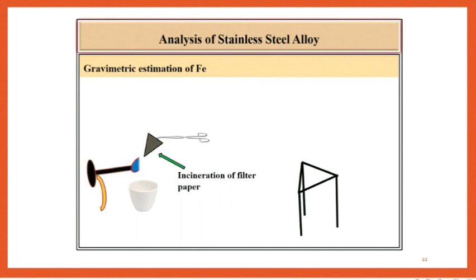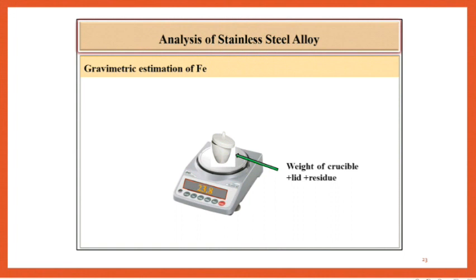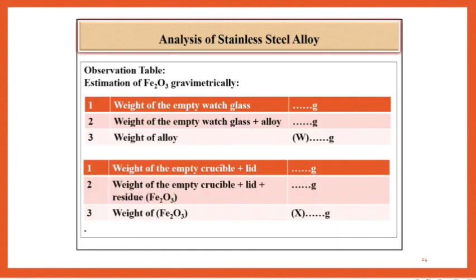Hold with a pair of tongs and burn it. Transfer to a previously weighed silica crucible and heat strongly for half an hour. Cool the crucible, then take the weight of crucible plus lid plus residue and record the reading in the observation table.